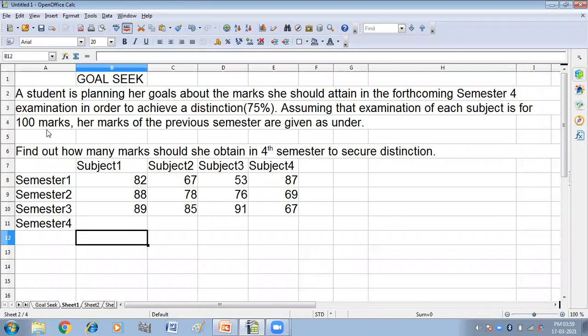A student is planning her goal about the marks she should attain in the forthcoming semester 4 examination in order to achieve a distinction 75%. Assuming that examination of each subject is for 100 marks, her marks of the previous semester are given. Find out how many marks should she obtain in the forthcoming semester to secure the distinction.